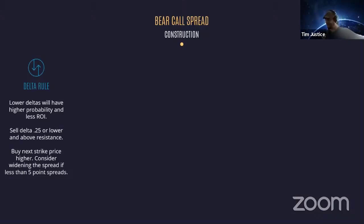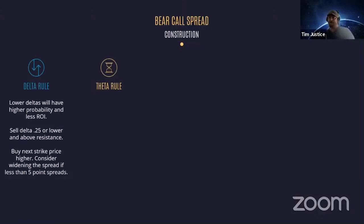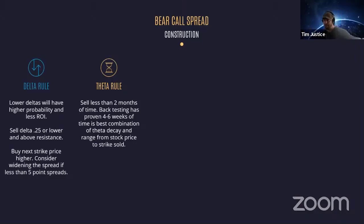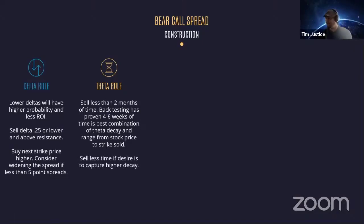When I'm building bear call spreads, I like to have five-point spreads or bigger, depending on the size of the stock. Your theta rule — when building a strategy out — is the time-to-expiration rule. When we're doing credit spreads, we want to be less than 60 to 65 days of time. The Russell 2000 system sells around 65 days, but you can sell 30-day credit spreads. I really like the sweet spot between 30 and 45 days personally — go four to six weeks out in the option chain.